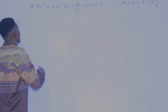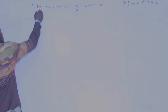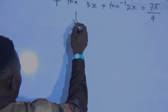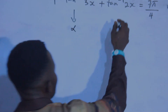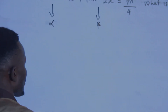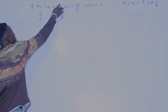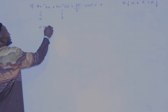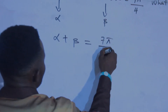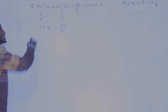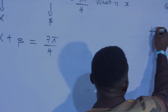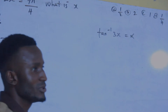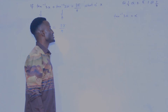If we want to solve this using the hand method, let us substitute this to be alpha and substitute this to be beta — so this is alpha and this is beta. That shows that alpha plus beta is equal to seven pi over four. I substitute the inverse: tan inverse of 3x is equal to alpha.